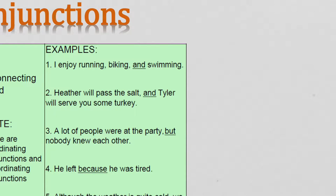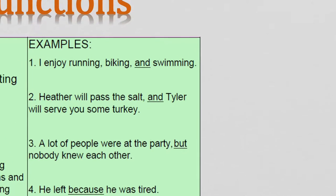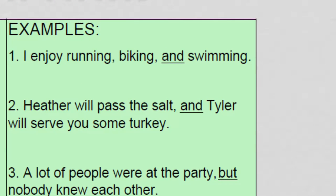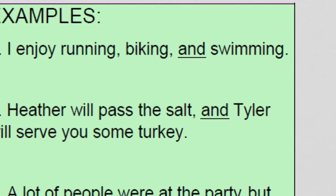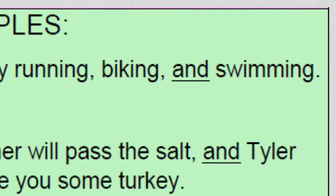So the first example: I enjoy running, biking, and swimming. You can see I've underlined the word 'and.' And is a conjunction. When I say that 'and' is a connecting word, it connects all of these items in the list — all of the things that I enjoy: running, biking, and swimming. Notice that when we use 'and' in a list, we always put a comma before 'and.'